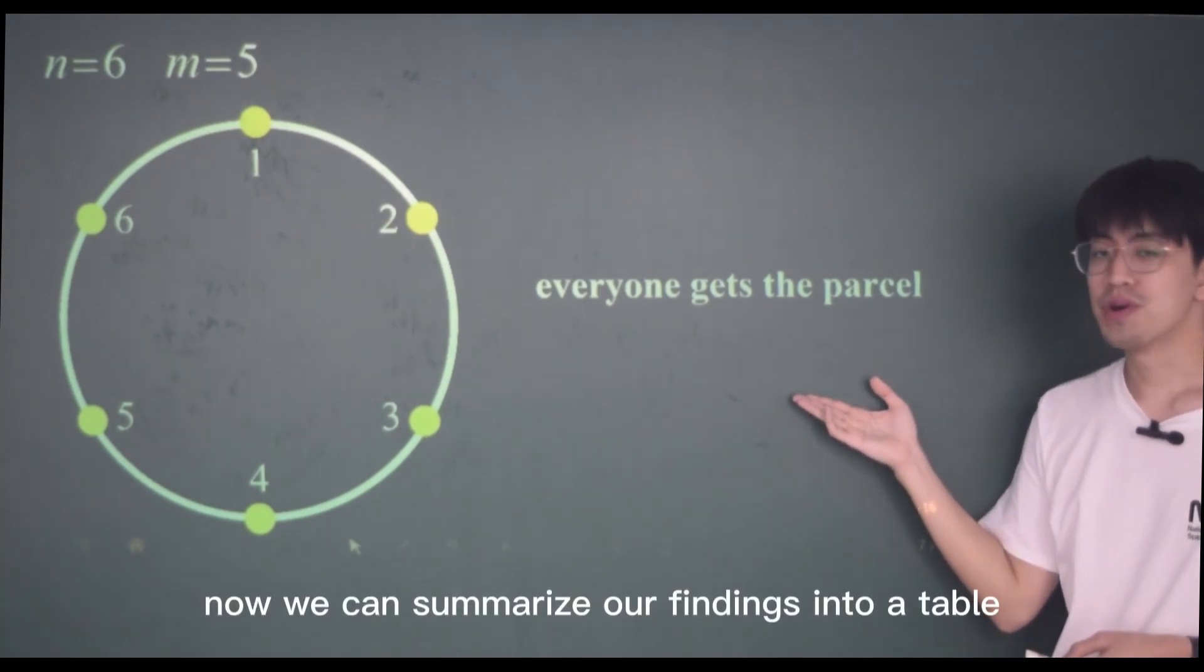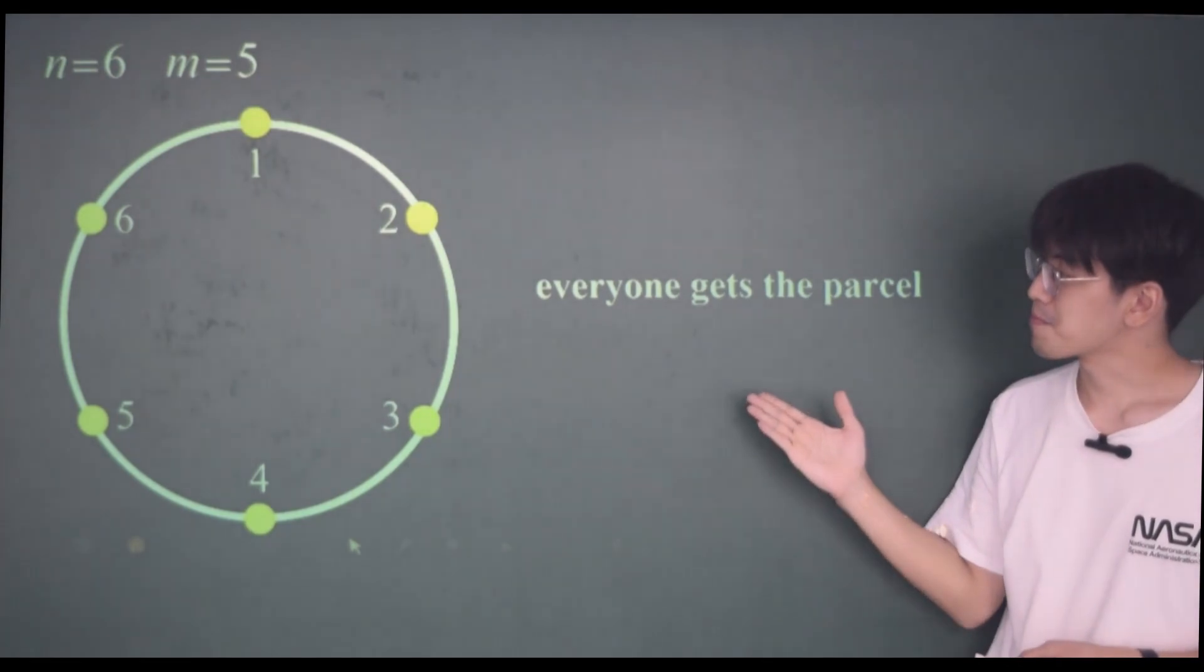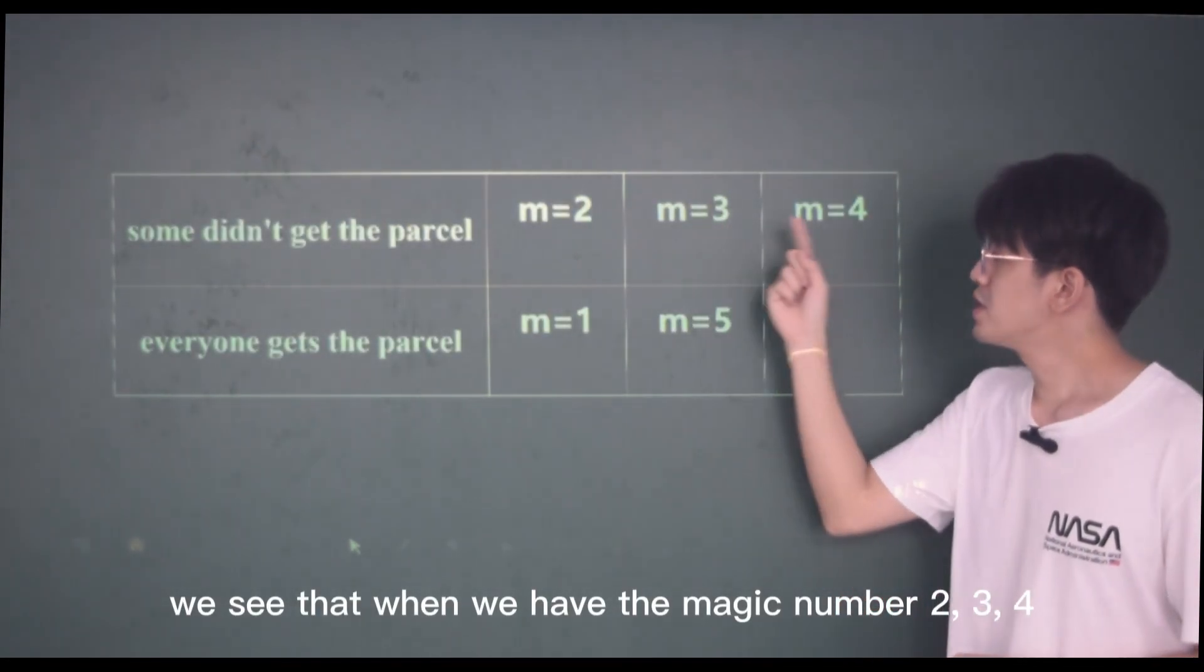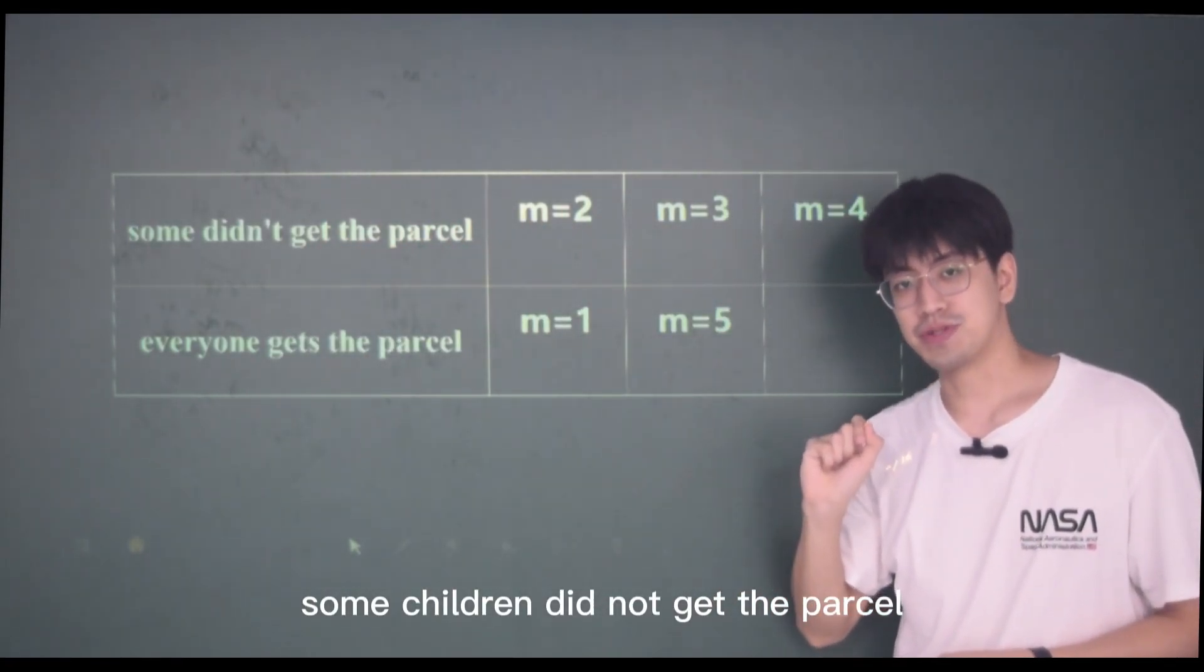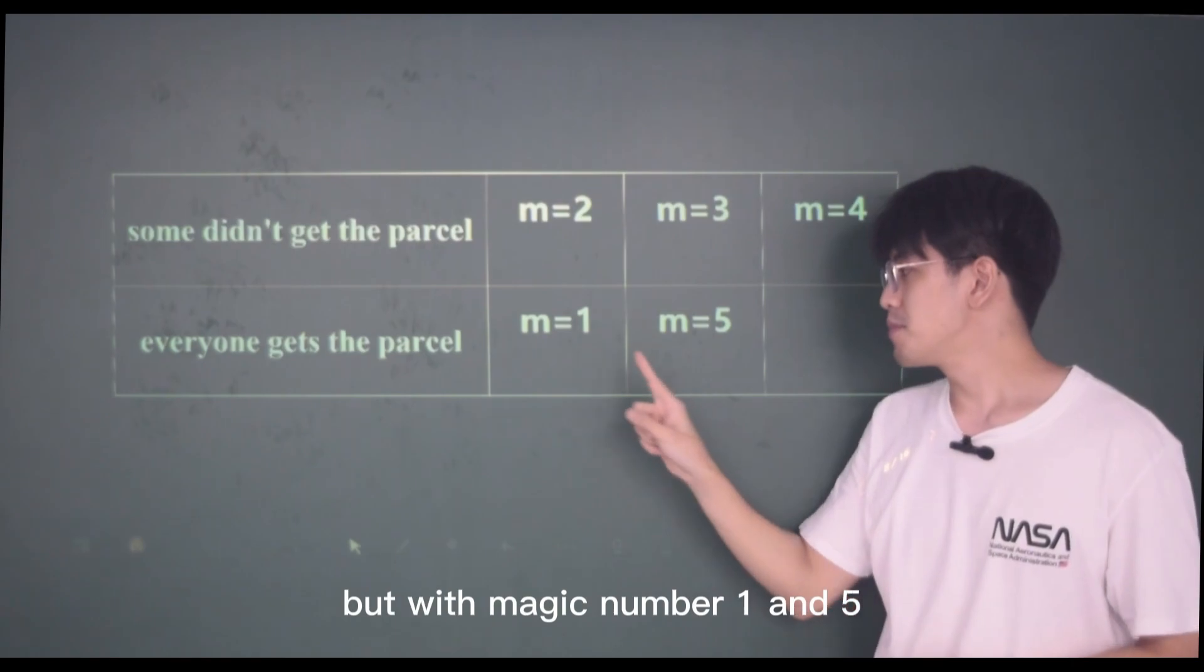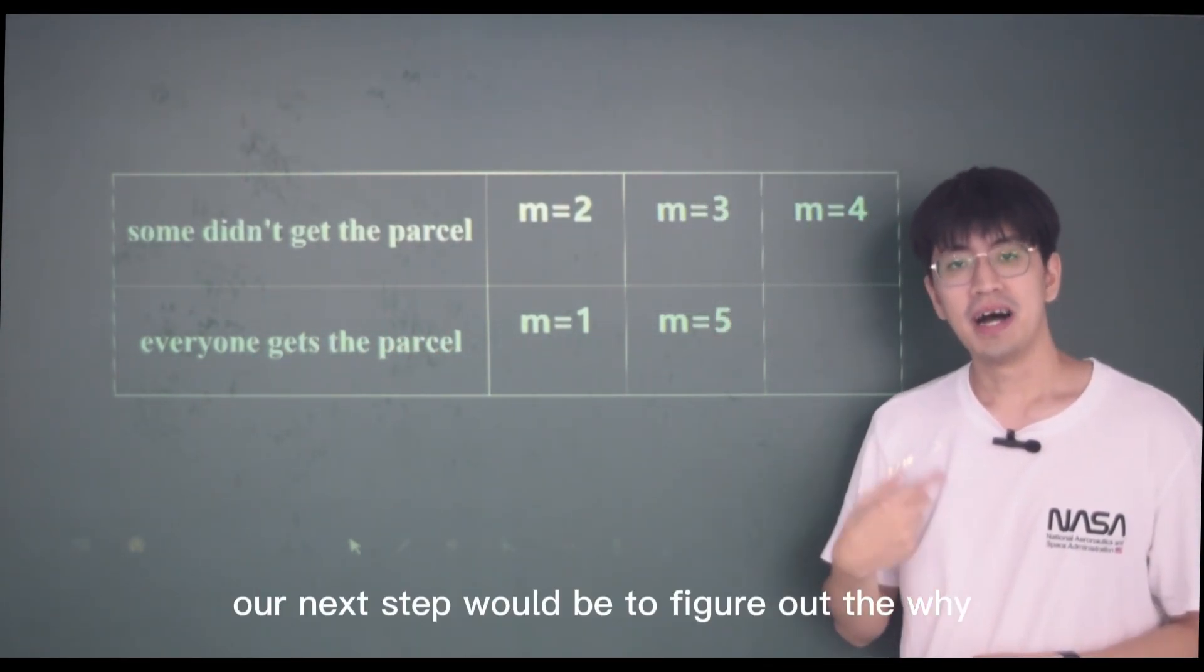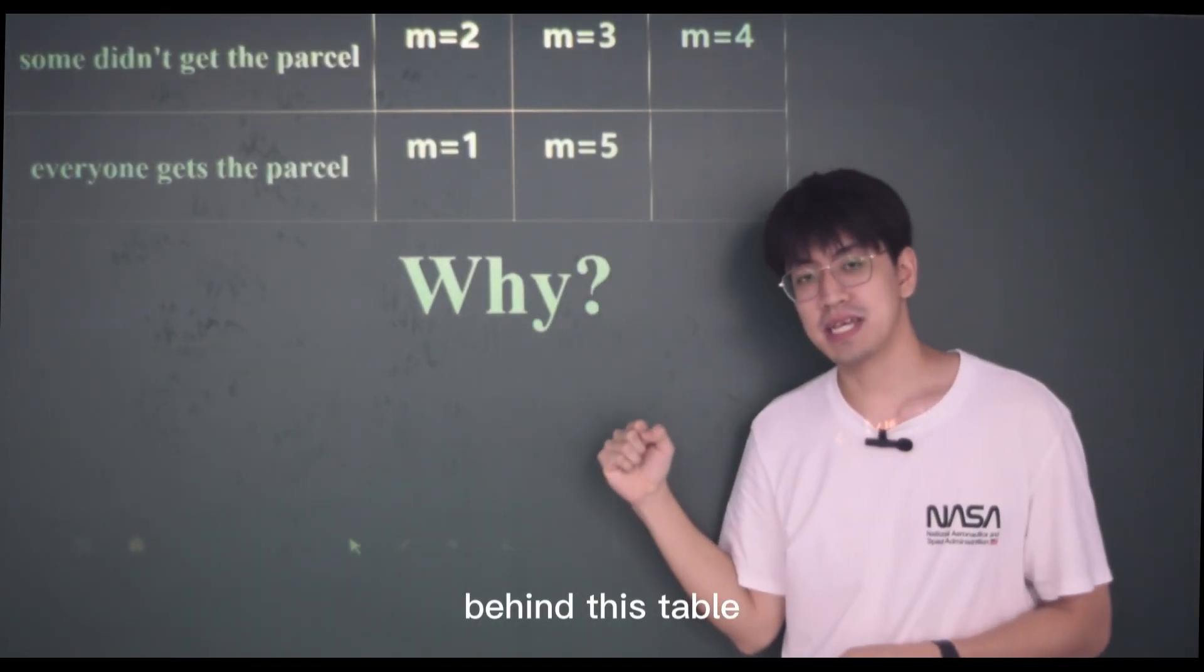We can summarize our findings into a table. We see that when we have the magic number two, three, four, some children did not get the parcel. But with magic number one and five, everyone gets the parcel. Our next step would be to figure out the why behind this table.